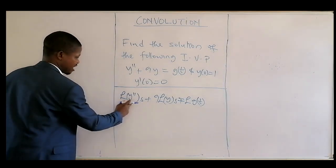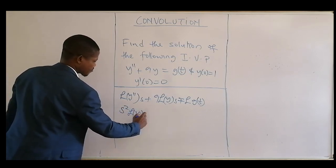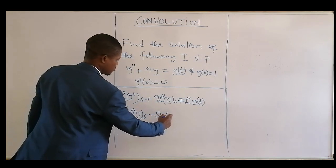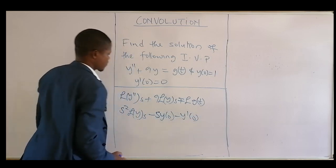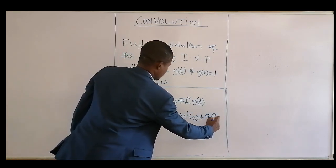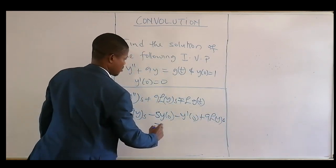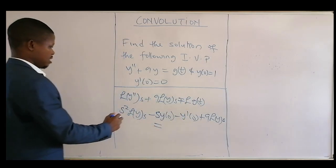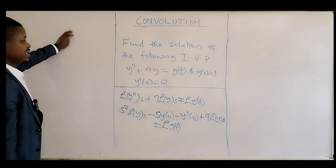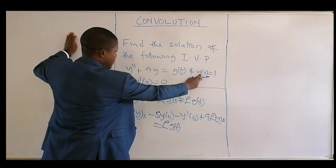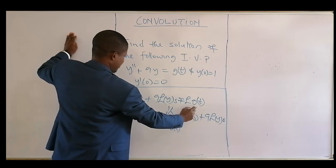The second step is to get the Laplace transform of the second derivative. Laplace of y'' is s² times Laplace of y minus s·y(0) minus y'(0), plus 9 times Laplace of y, equals Laplace of g(t). Now we apply the initial value conditions: y(0) = 1 and y'(0) = 0.